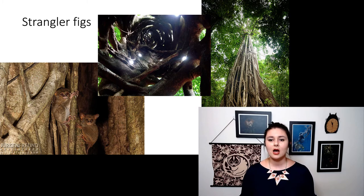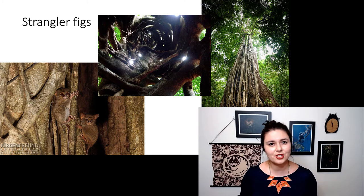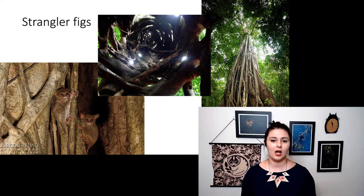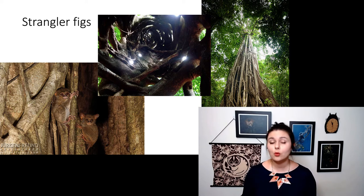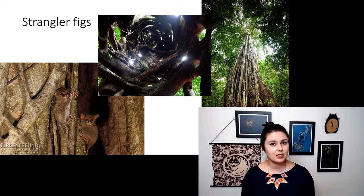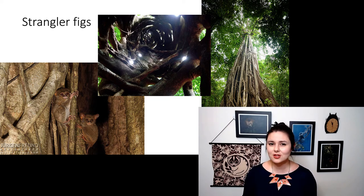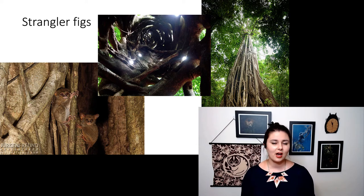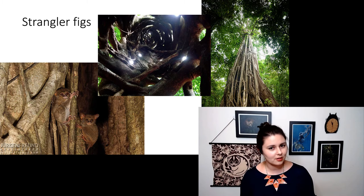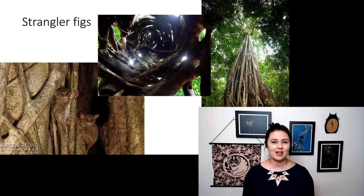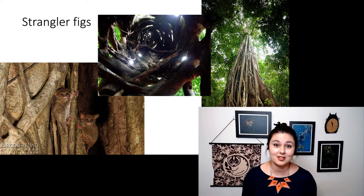Tarsiers have pretty small hands, so they like to hang on to relatively small trees — strangler figs are good for that. In the middle picture you can see the inside of a strangler fig: once it kills the original tree, that tree can rot away and leave a hollow space. Tarsiers really like this because it gives them multiple exits and entrances. Even though they are carnivores themselves, a lot of things like to eat tarsiers because they are pretty small, so this hollow allows more ways to escape.